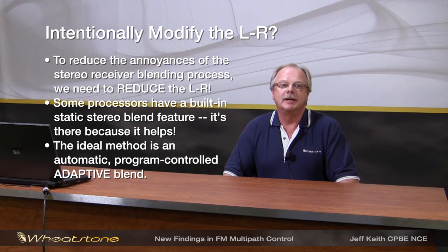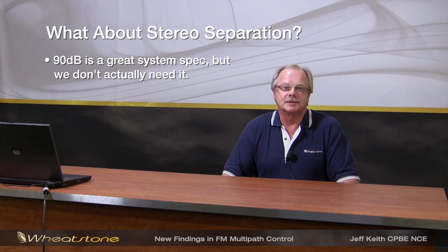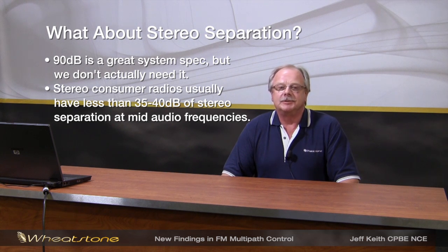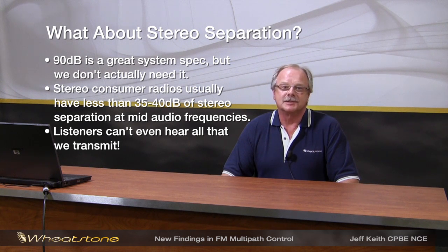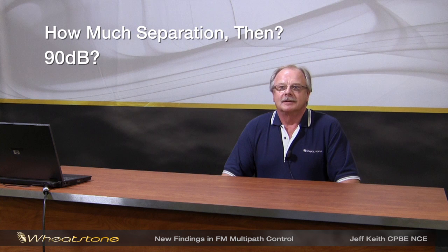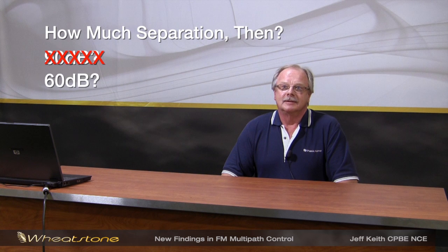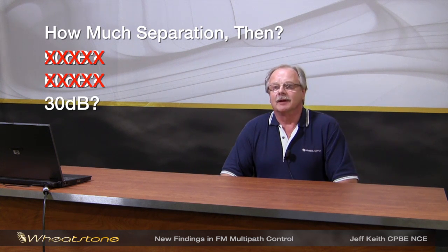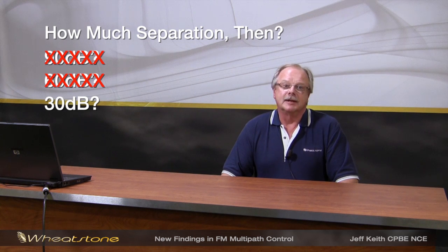The way you would do an adaptive blend is to make it a program-controlled function. But now we're talking about reducing stereo separation, and as broadcast engineers, we typically try to get the most stereo separation we can — 90 dB, which most exciters and stereo generators will do. However, consumer radios typically are only between 35–45 dB on average, which means listeners can't even hear all the stereo we're trying to transmit. So how much stereo separation do we actually need? It turns out it's a lot less than 90 dB — in fact, it's not even 60 dB, and for a lot of people who aren't audiophiles, it's even less than 30 dB.